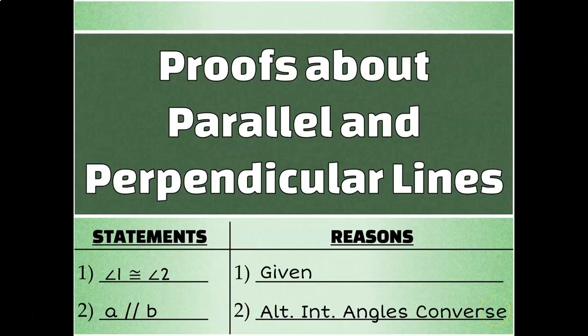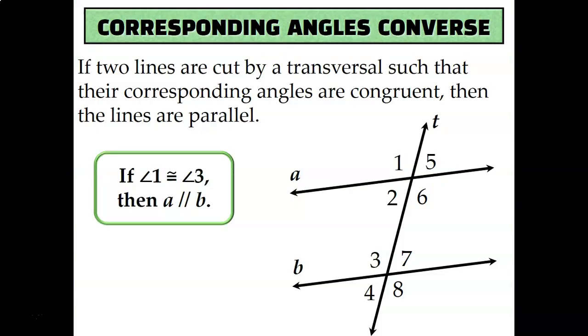Let's talk about how to prove that two lines are parallel by writing a two-column proof using the special kinds of pairs of angles that we've been talking about. To get started, let's review those special kinds of pairs of angles, like corresponding angles.